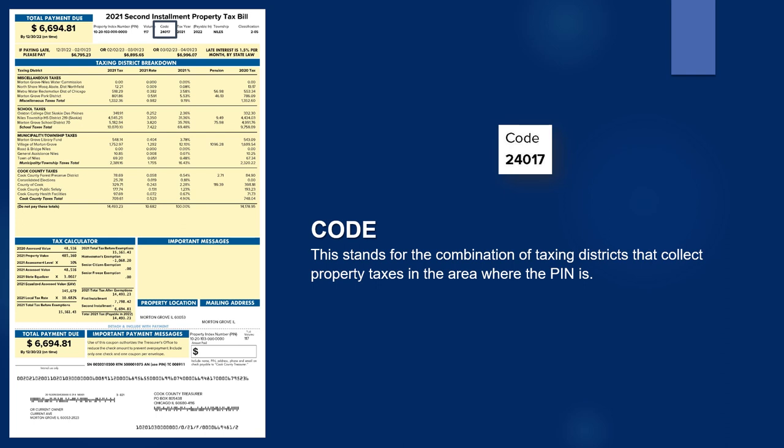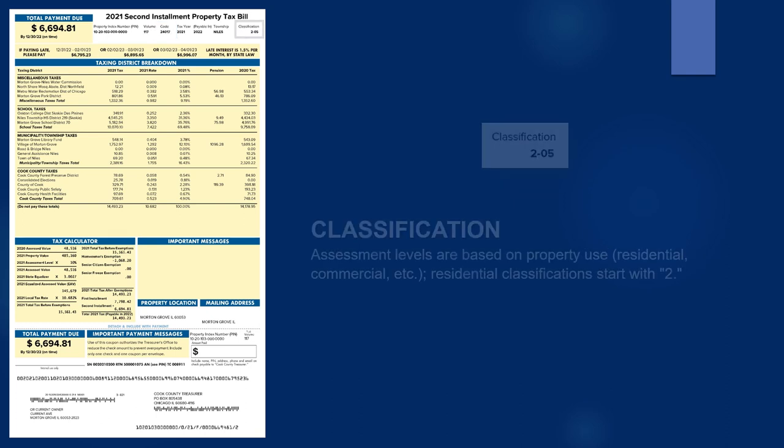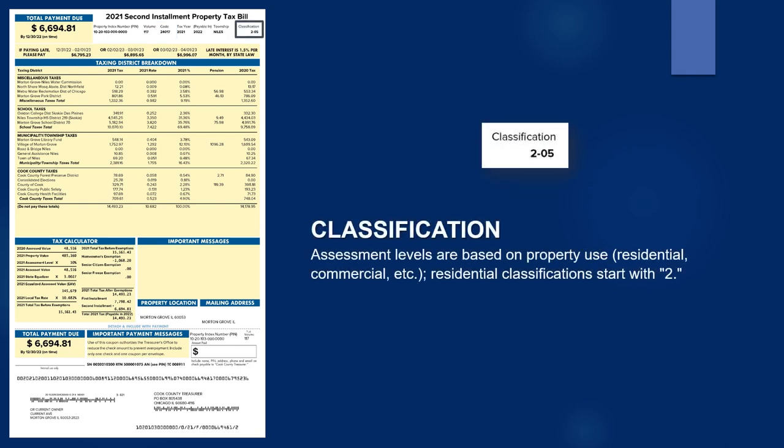The tax code stands for the combination of taxing districts that collect property taxes in the area where the PIN is located. Assessment levels are based on property use. Residential classifications start with the number 2.